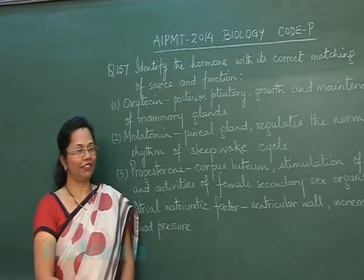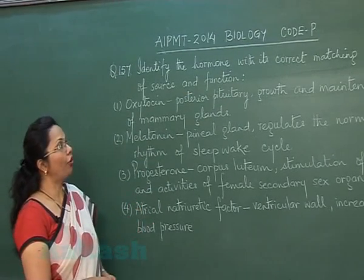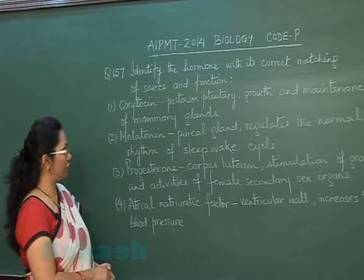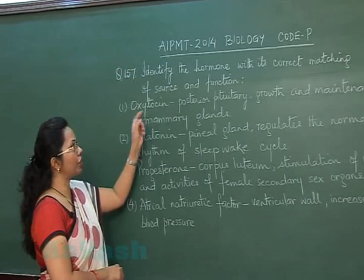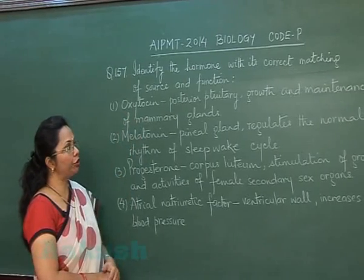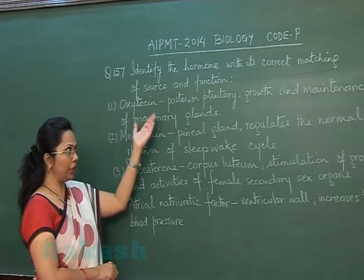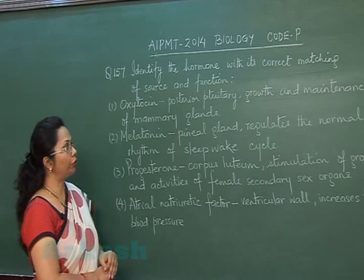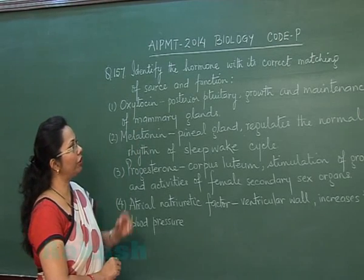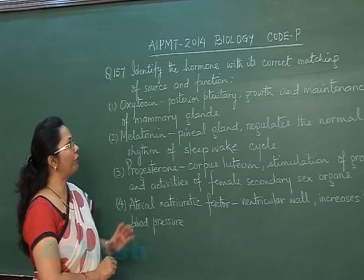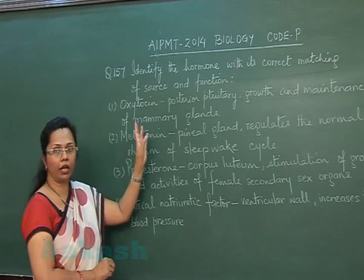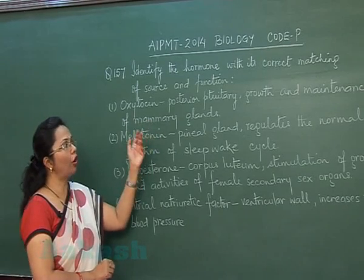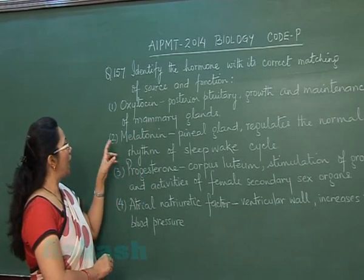Question 157: Identify the hormone with its correct matching of source and function. First choice: oxytocin from the posterior pituitary — it is indeed released from the posterior pituitary although synthesized by the hypothalamus. However, the function given is growth and maintenance of mammary glands, which is incorrect because oxytocin is required for milk ejection, not for growth and maintenance.